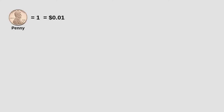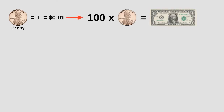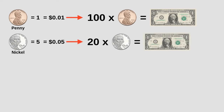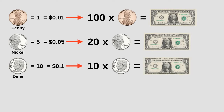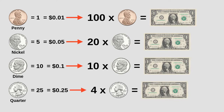For example, in the United States, we can have a one cent coin, often called a penny. It takes one hundred pennies to make one dollar. We can have a nickel, which is worth five cents — it takes twenty nickels to make one dollar. We can have a dime, which is a ten cent coin — it takes ten dimes to make one dollar. Or we can have a quarter, which is worth one quarter of a dollar or twenty-five cents — it takes four quarters to make one dollar.